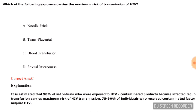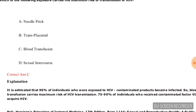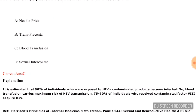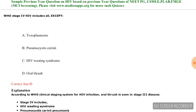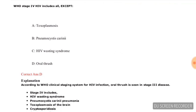Which of the following exposures carries the maximum risk of transmission of HIV? Options are needle prick, transplant, blood transfusion, or sexual intercourse. The correct answer is blood transfusion — blood transfusion carries the maximum risk of transmission of HIV. A brief explanation is provided on screen.